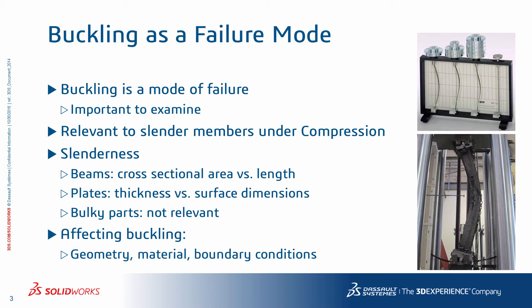Things that affect buckling: obviously geometry is important. For example, when you have a long beam or a thin plate, you may add stiffeners to the web or on the plate to increase stiffness and avoid buckling in particular. Material stiffness is of course a factor.